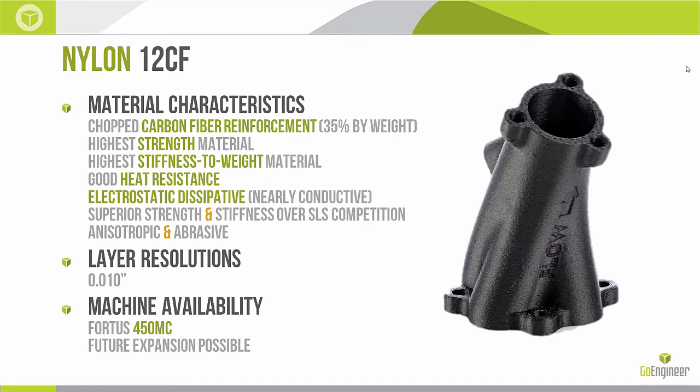Nylon 12 CF — the CF stands for chopped carbon fiber reinforcement at 35% by weight. It has one of the highest strength properties, in particular flexural strength and tensile strength. In XY it is the highest stiffness-to-weight material — specific stiffness is important for lightweight components in automotive and aerospace, or for designing jigs and fixtures used by humans. It has good heat resistance: the heat deflection temperature is 289 degrees Fahrenheit — only Ultem 9085, Ultem 1010, and PPSF are superior.